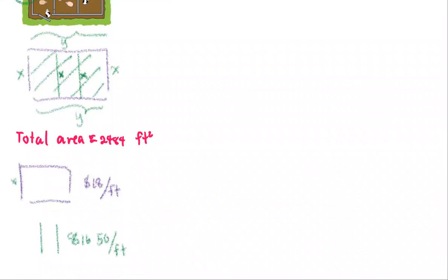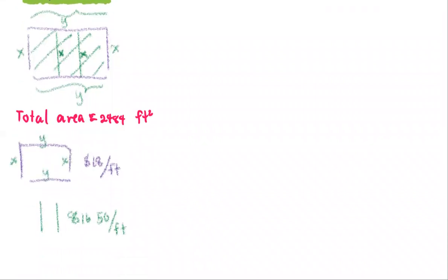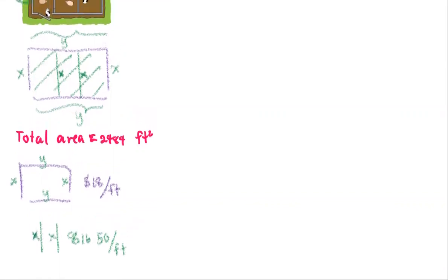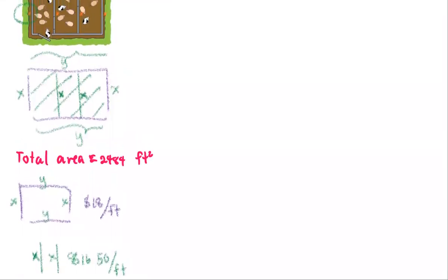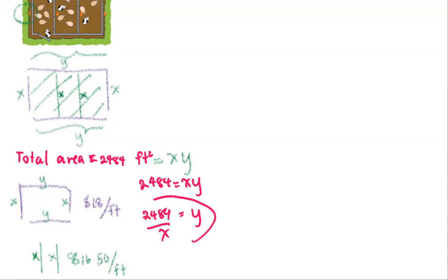On the subdiagram, for the exterior fence we have dimensions x, x, y, y. For the interior, there are two of them, each of length x. Now we set up the relationship between x and y from the total area. The area formula is x times y, so 2484 = x·y, which means y = 2484/x. We set that aside as our constraint.